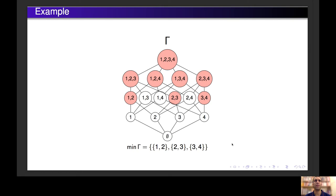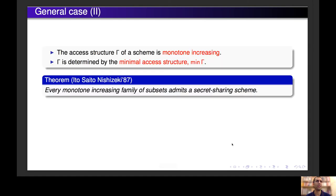For this example, the minimal access structure is the family of the subsets {1,2}, {2,3}, and {3,4}. We know that every monotone increasing family of subsets admits a secret sharing scheme — so every monotone increasing family of subsets is the access structure of some scheme. Now we will present a general construction: given a monotone increasing family of subsets, we will construct a scheme realizing this family.